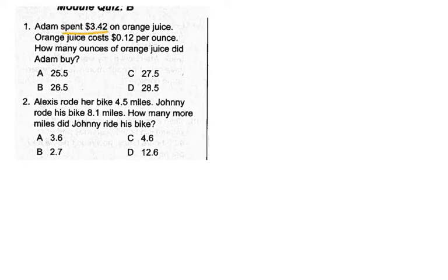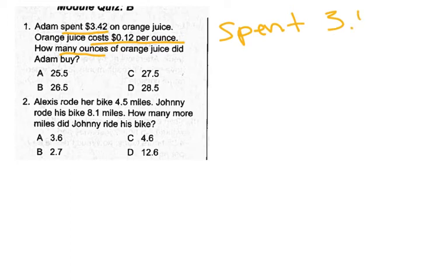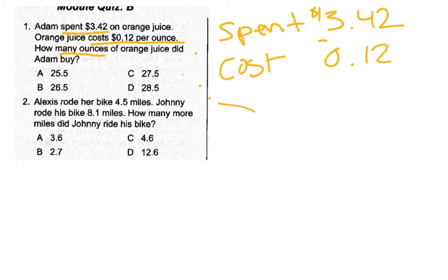I need to pick out the important info. We know he spent $3.42 on the orange juice, and the orange juice cost $0.12 per ounce. We need to know how many ounces — that's what we're looking for. So I'm going to write that down: spent $3.42, cost is $0.12 per ounce, and we need to know how many ounces.